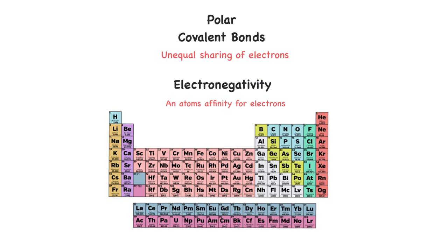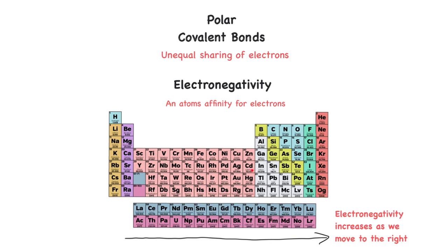The way the periodic table is set up, electronegativity increases as we move to the right. Atoms on the right side are more electronegative — they are closer to having their valence shell full, and so they want those electrons more than those on the left-hand side. If we pair two atoms that are unequal in their electronegativity, we will end up with a polar covalent bond. The examples I had shown before had atoms equal in their electronegativity, but pairing two atoms unequal in electronegativity will form a polar covalent bond.